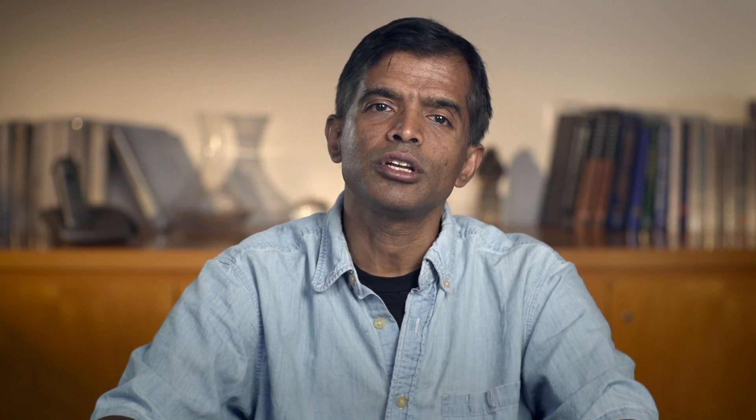For the theme park business, I initially found only two publicly traded U.S. companies — Six Flags and Cedar Point. That's far too small a sample, so I went global, looking at theme park companies in Europe and Asia. Betas are standardized around one, so there's no reason to stay U.S.-centric. I ended up with about 20 companies. Consumer products and interactive gaming were easier. At the end of the process, I have the unlevered betas for each of the five businesses.